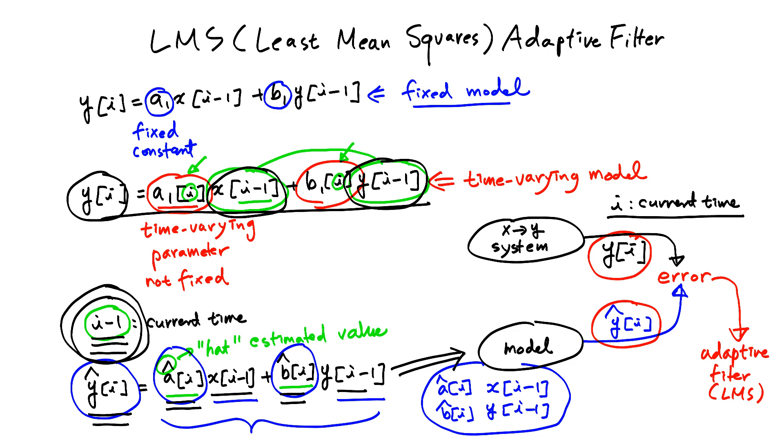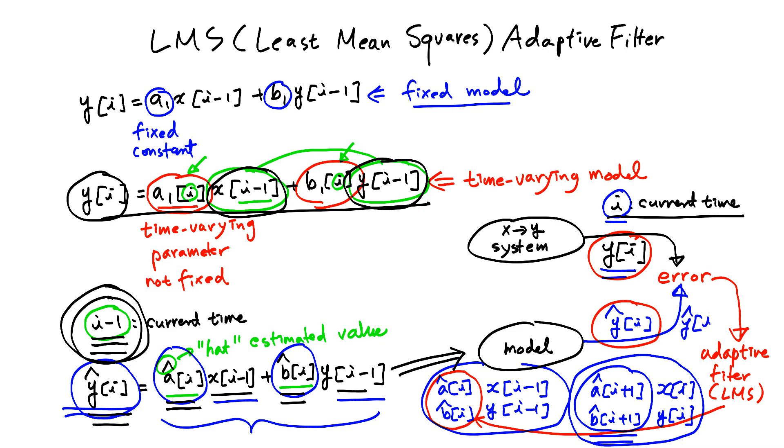This LMS will update these parameter values. We will have new estimated parameter values: A of i plus 1 hat and B of i plus 1 hat. Note that we are at time i now, and basically we are predicting or estimating future parameter values. Because we have these parameters and we have this data available, which is Y of i, and because we are at time i, X of i is also available. Using these four values, we can compute the next Y value, which is Y of i plus 1.